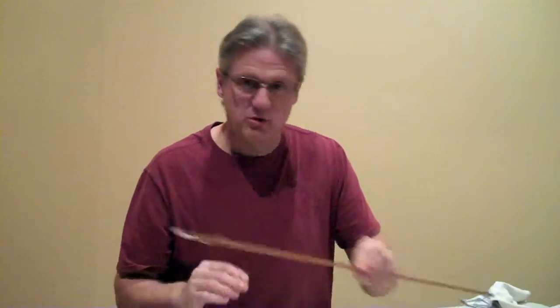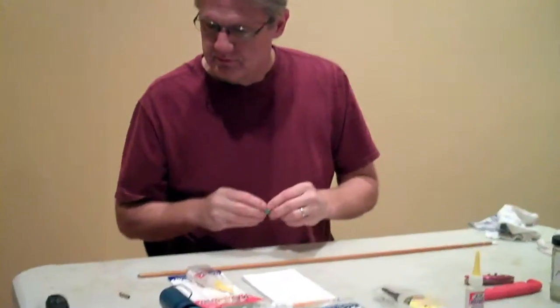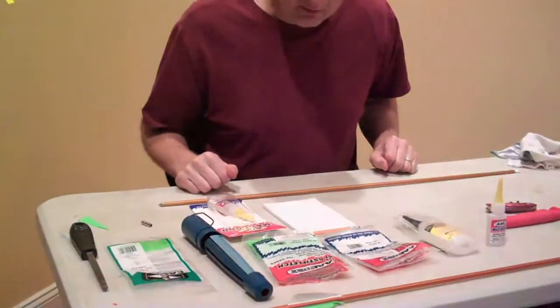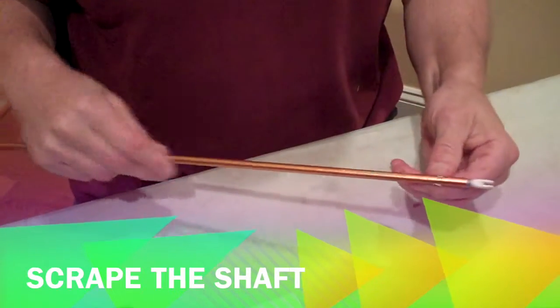We'll go ahead and remove that. Now you can cut. That's the first part. So we got the fletching off the arrow now.